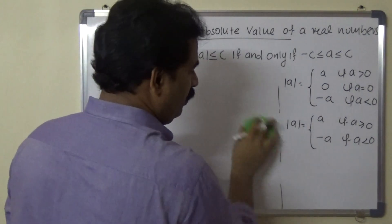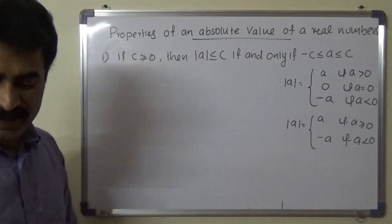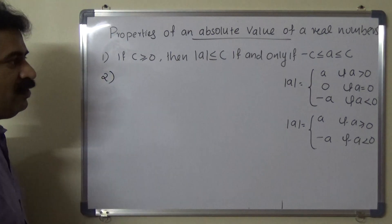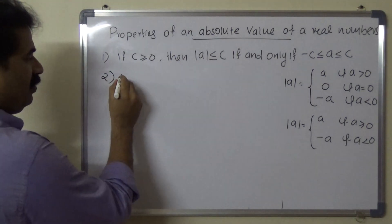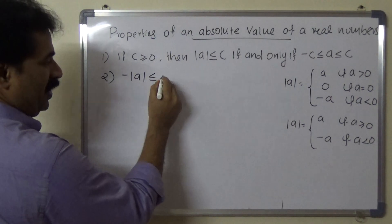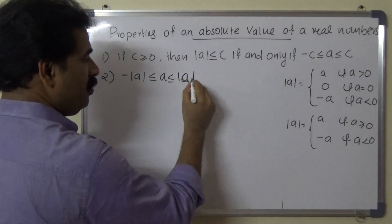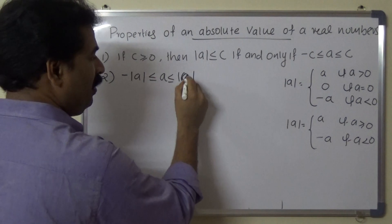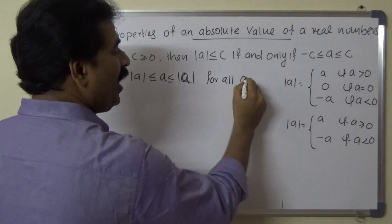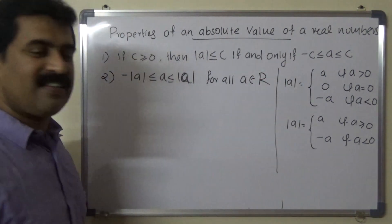Next, we want to prove the second property: minus modulus A less than or equal to A less than or equal to modulus A, for all A belonging to R. This is the second property.